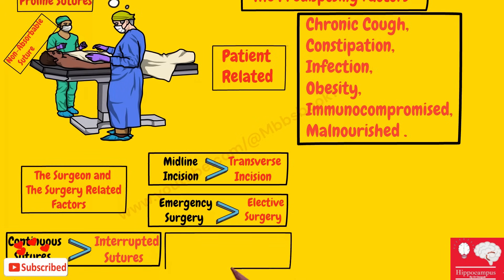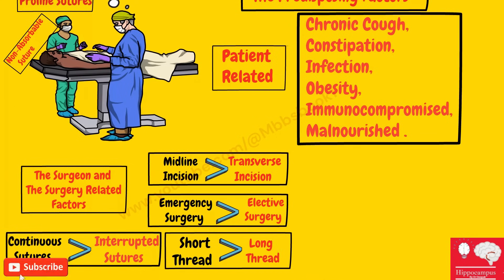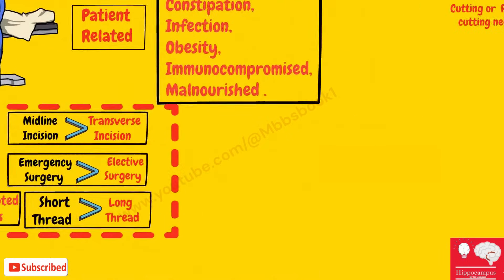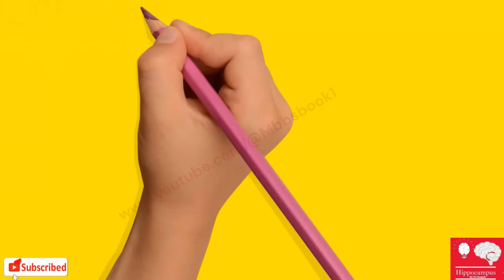Burst abdomen is also more common with short thread compared to long thread. The length of the thread should be a minimum of four times the length of the rectus sheath wound; if shorter thread is used it can cut through the rectus sheath and increase the chances of burst abdomen.